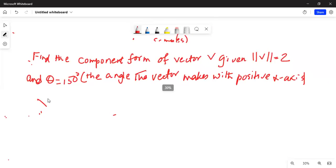The component form of vector v is equal to absolute value of v cosine theta i plus absolute value of v sin theta j where i and j are unit vectors. i along the x axis, j along the y axis.